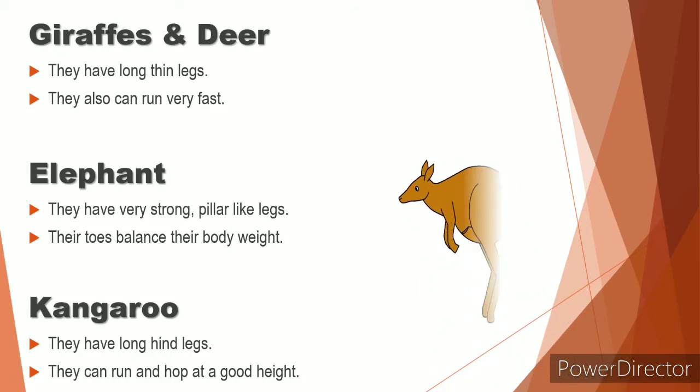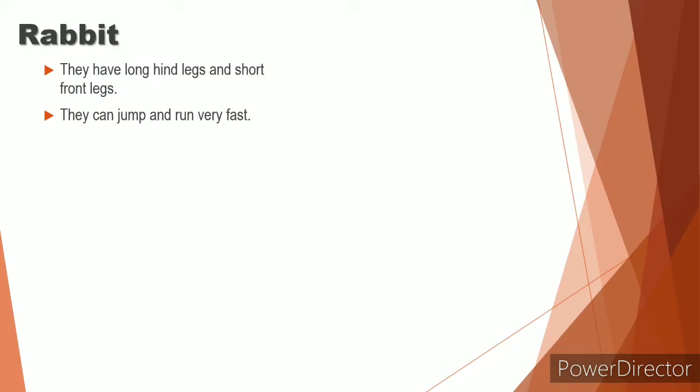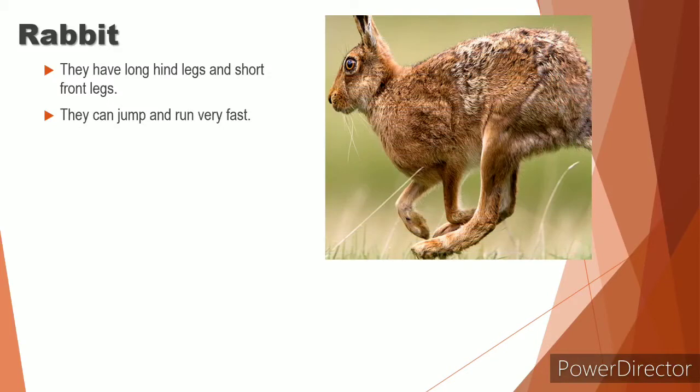Now let's know about the rabbit. They also have long hind legs and short front legs. They can jump and they can also run very fast. See their legs. Short front legs and long hind legs.